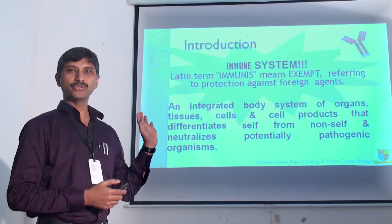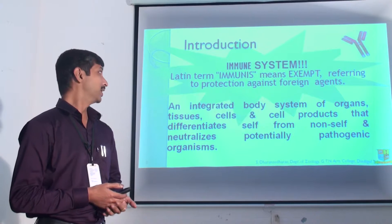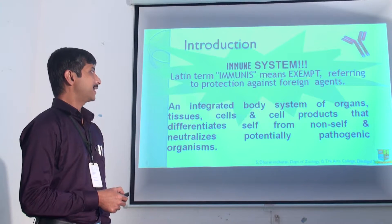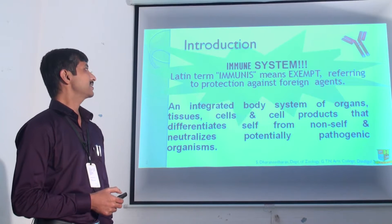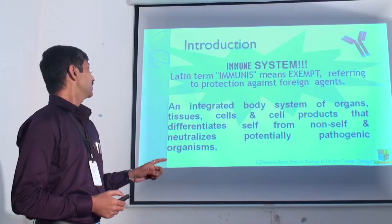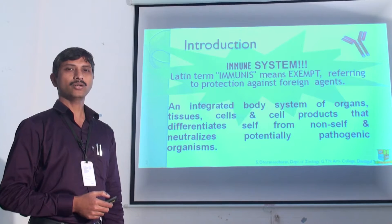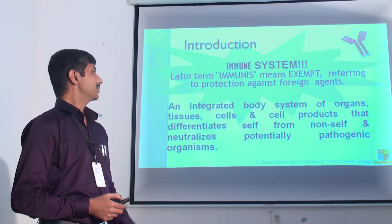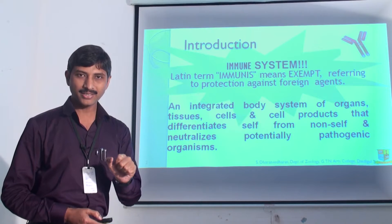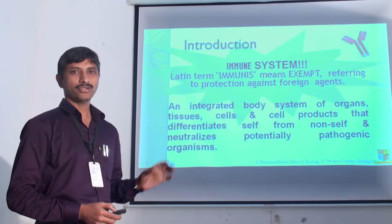We start with the immune system — how to prepare the immune system. Before going to that, we will see what is immunity. Immunus is the Latin term meaning exempt, referring to protection against foreign antigens. It is an integrated body system of organs, tissues, cells, and cell products that differentiate self from non-self and neutralize potentially pathogenic organisms. So it identifies foreign particles and neutralizes them. This is the reaction of the immune system.